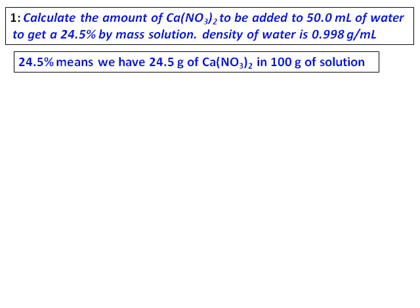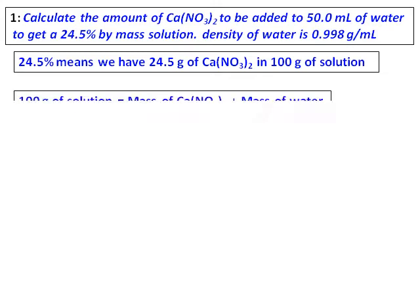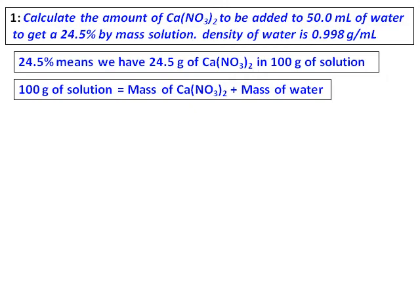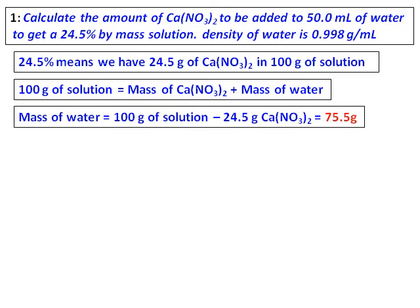When I say 24.5%, what I mean is I have 24.5 grams of calcium nitrate in 100 grams of solution. You have to calculate, for the amount of water given, how much calcium nitrate you have to add. In 100 grams of solution, that includes mass of calcium nitrate plus mass of water, and the mass of calcium nitrate is 24.5. Therefore, mass of water equals 100 minus 24.5, which is 75.5 grams.